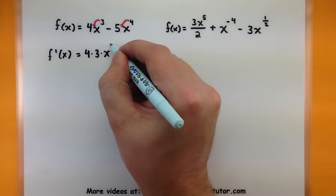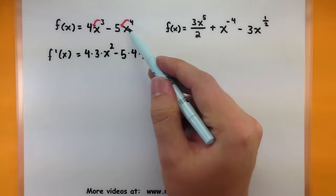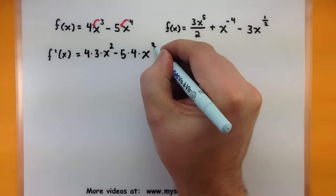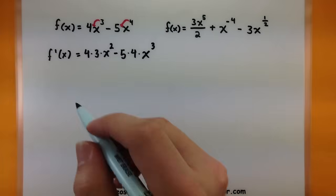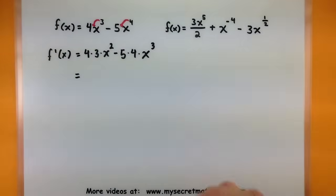Now I have to write in the new powers. So the three gets reduced by one, it's now a two. The four gets reduced by one, it's now a three. We just have a little bit more cleaning up to do and then this one's finished.